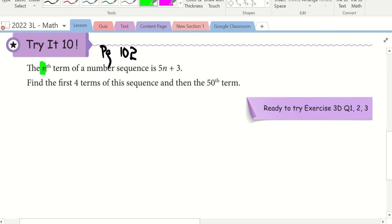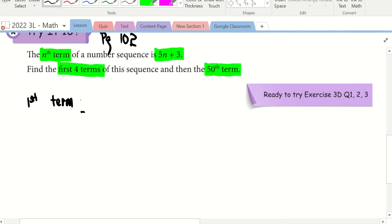In this question, the N term, the formula is given to be 5N plus 3. Our job is to find the first four terms as well as the 50th term. If I want to find the first term, I must replace my letter N by what? I must replace my letter N by 1. Because the first term is number 1. Press the calculator. What is the answer? 8. Very good.